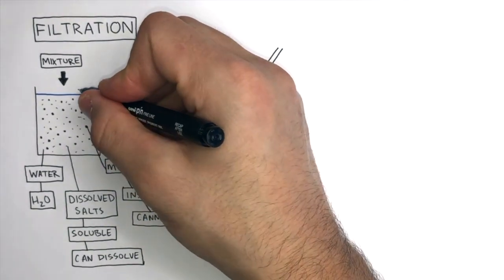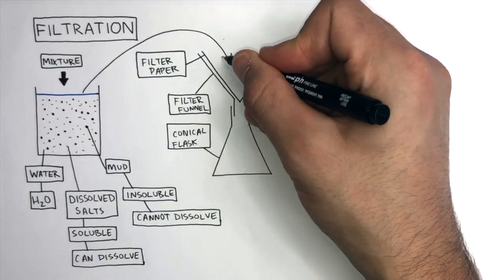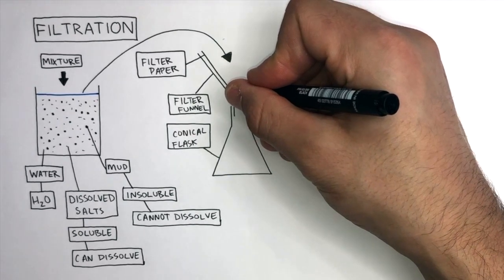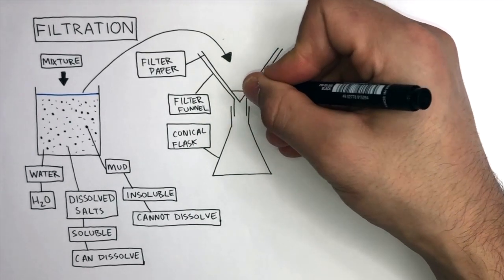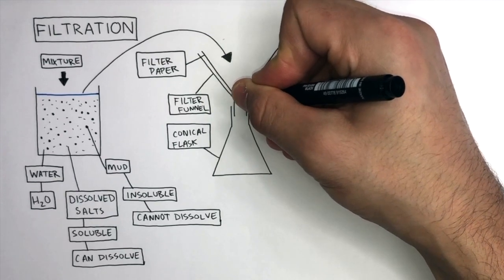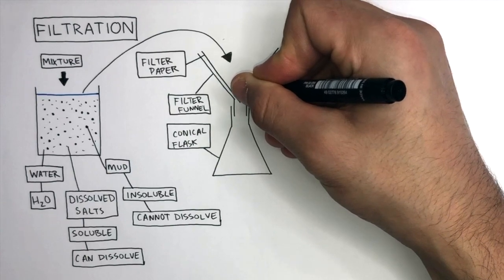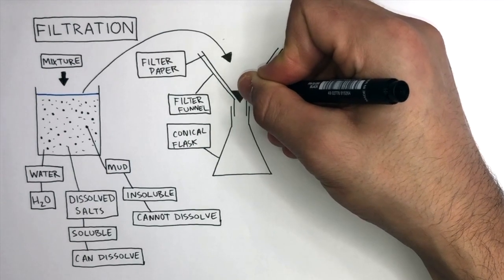So once you've set up the apparatus, you gently pour the mixture into the filter funnel. The large insoluble substances, in this case mud, gets trapped by the filter paper because the holes in the filter paper, also known as pores, are too small. They will not let the large insoluble substances pass through.